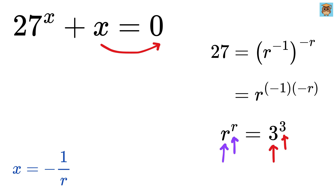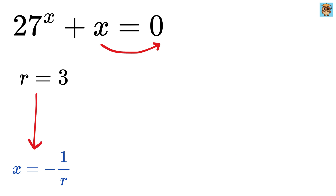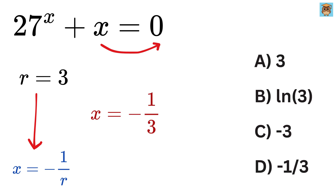We can rewrite 27 as 3 cubed. This way, we get the same bases and the same exponents on both sides, so this gives us r equals 3. But don't forget about the substitution — we have to rewrite x as minus 1 over r, so we get x equals minus 1 over 3. The correct option is option D.